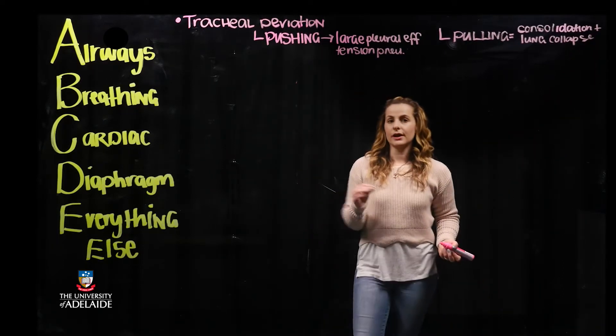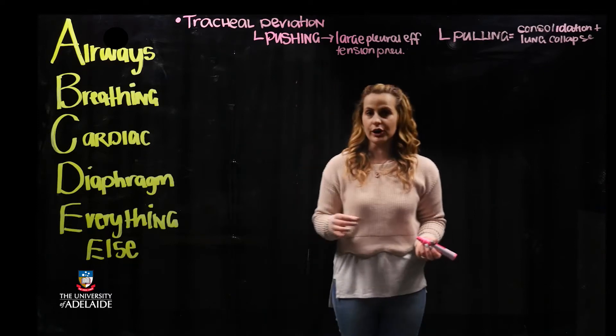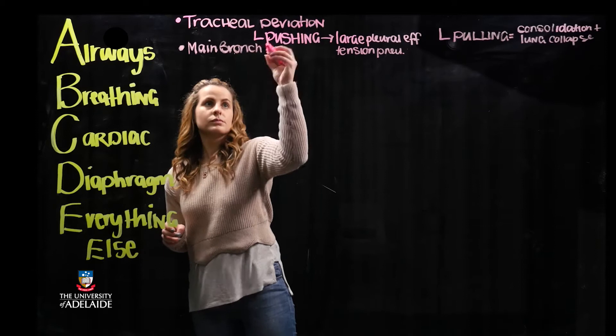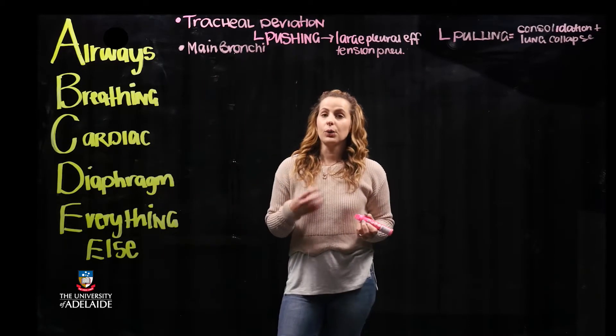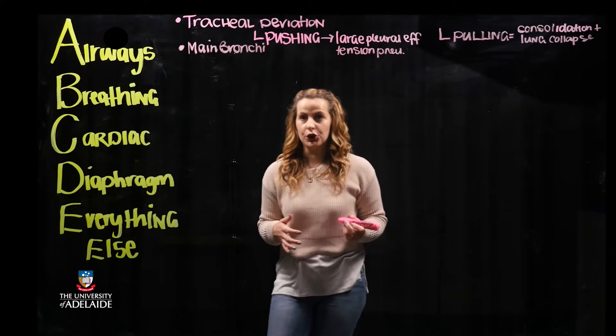The second criteria with the airways is examining the main bronchi. Lastly, we're going to be looking at the hilar structures such as the vasculature as well as lymph nodes.